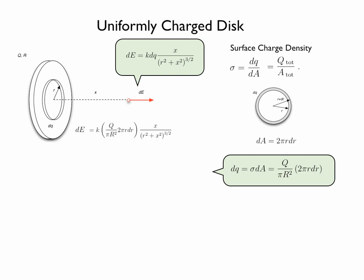Here we have replaced dq with the value that we calculated. The electric field can then be written simply as kQx over the radius of the disk squared, times 2 times the radius of the ring dr, over little r squared plus x squared to the power of three halves.